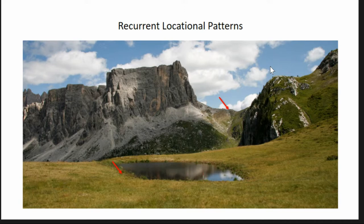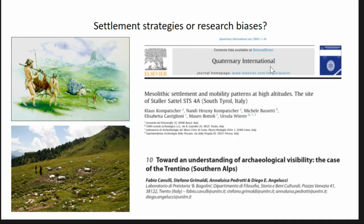When I talk about Mesolithic sites, I combine the so-called base camps and high-altitude hunting stands, because we struggle to identify them from surface finds most of the time. These recurring patterns are, for instance, in saddles and passes and around small natural lakes. The question is: are these patterns related to the actual locational and mobility strategies of Mesolithic hunter-gatherers, or are they related to the survey strategies of archaeologists and surface visibility?